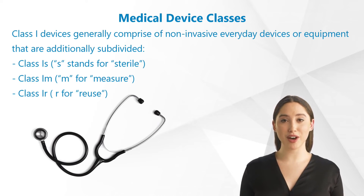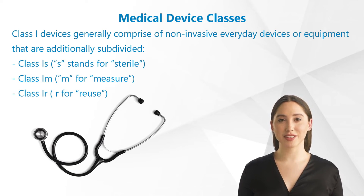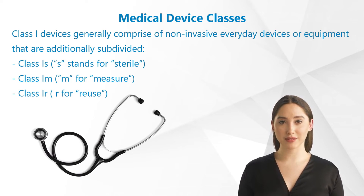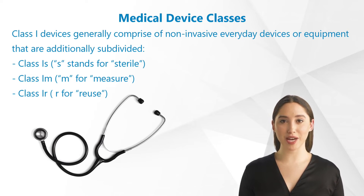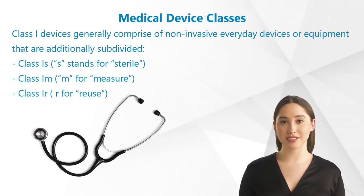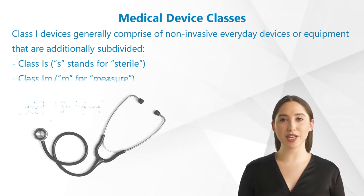Class 1 devices generally comprise non-invasive everyday devices or equipment, additionally subdivided into Class 1S — S stands for sterile — Class 1M — M for measure — for devices used to measure things, and under MDR law, a new Class 1R — R for reuse — for products that can be reused or reprocessed. Some examples under Class 1S include stethoscopes, examination gloves, colostomy bags, or oxygen masks. Under Class 1M, examples include thermometers, droppers, and non-invasive blood pressure measuring devices.